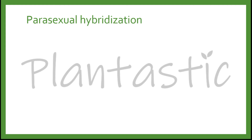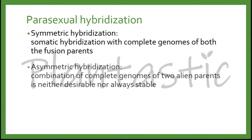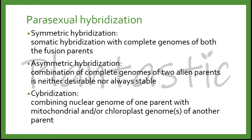There are three types of parasexual hybridization. The first is symmetric hybridization, which is the somatic hybridization with complete genomes of both fusion parents. The next is asymmetric hybridization, which is the combination of complete genomes of two alien parents that is neither desirable nor always stable. The third is cybridization, which combines the nuclear genome of one parent with the mitochondria and/or chloroplast genomes of another parent.